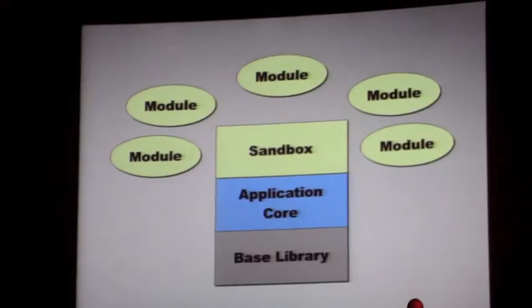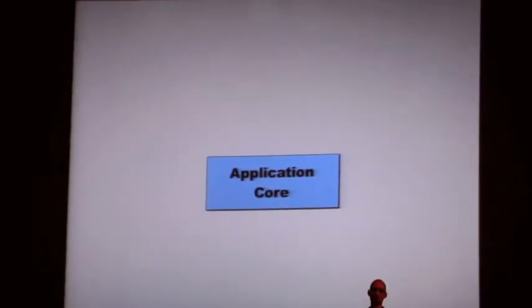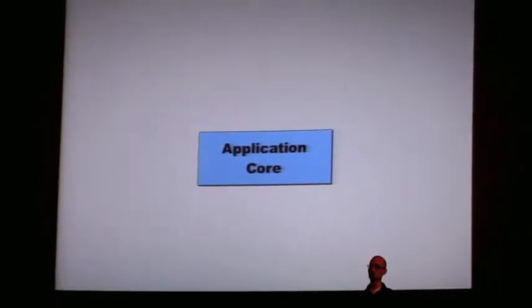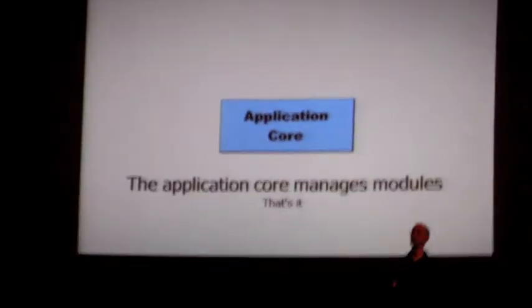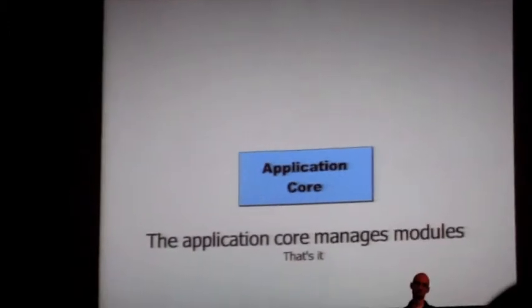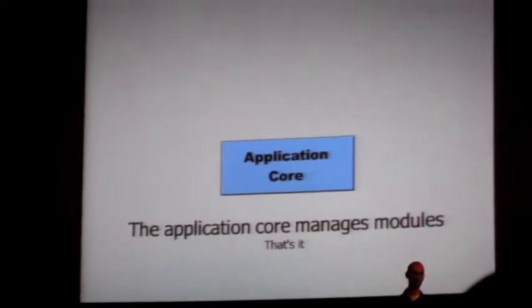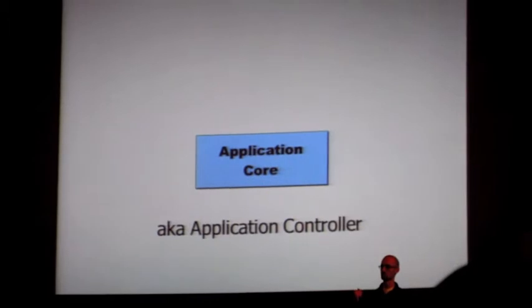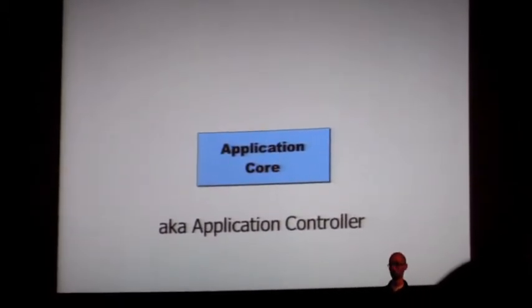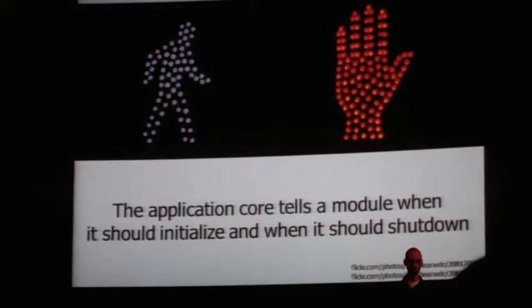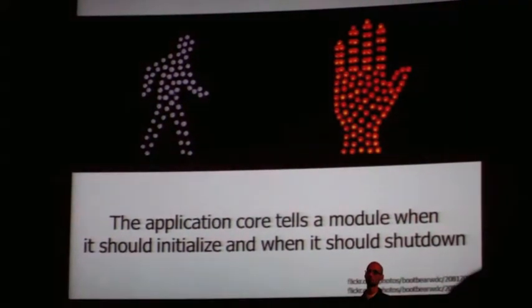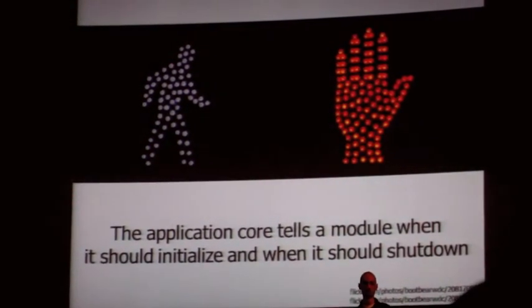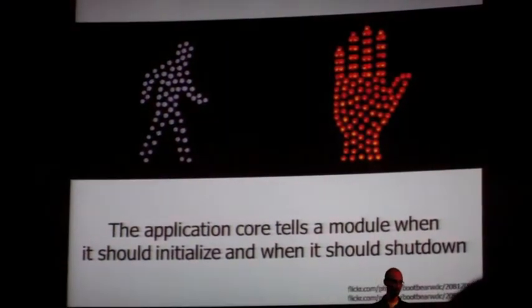The application core — the little blue box — is what has the guts of the application itself. It controls things on the page, basically controlling the modules. Its only real job is to make sure modules are being managed: that they're being started and stopped and doing the things they should. I also refer to this as the application controller in the context of MVC. The core will start modules, tell them their lifecycle has begun, and stop them when their lifecycle is over — calling init or destroy depending on the timing.